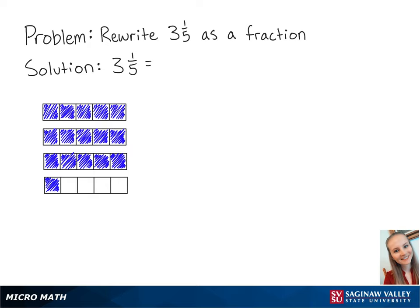The numerator in the fraction represents how many parts we have all together. The first 3 bars have 5 parts each, and the last bar has 1 part. So all together, we have 16 parts.